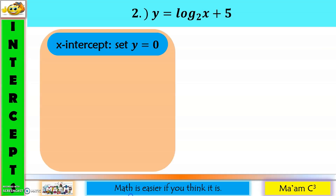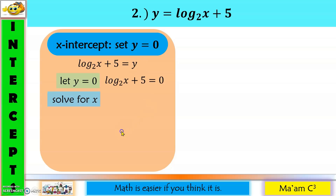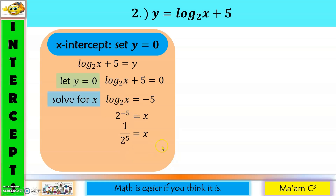For the second example, finding the x-intercept: set y equal to zero, then move 5 to the other side and convert to exponential form. So 2 raised to negative 5 equals x. Making the exponent positive gives 1 over 2 to the fifth, and since 2 to the fifth is 32, x equals 1 over 32. Therefore, the x-intercept is (1/32, 0).